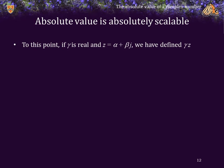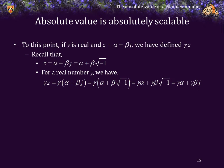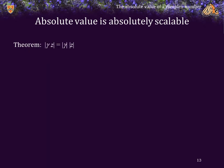We have already shown that if gamma is real and z is equal to alpha plus beta j, then we have defined gamma times z. To recap: if z is equal to alpha plus beta j, it's actually equal to alpha plus beta times the square root of negative 1. Thus, if gamma is any real number, we are simply distributing the product gamma times (alpha plus beta j) across the sum, which gives us a result. So, what is the absolute value of gamma z, and is that equal to the absolute value of gamma times the absolute value of z?